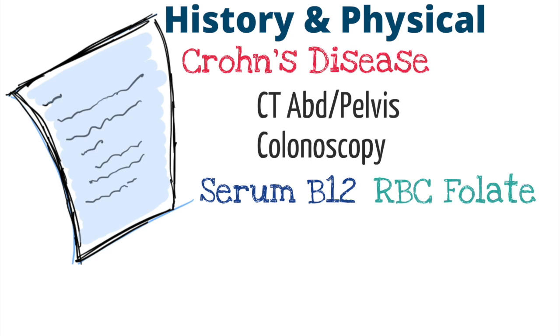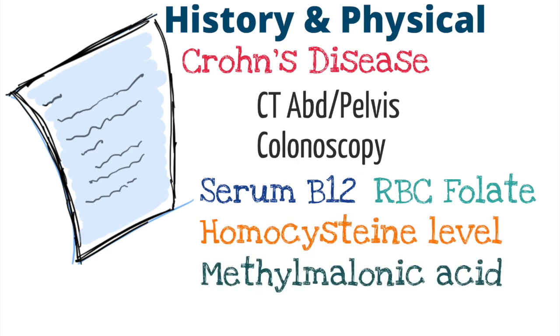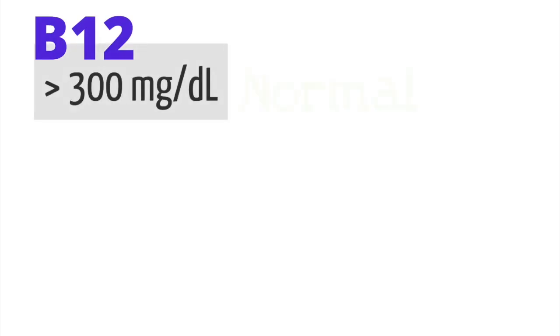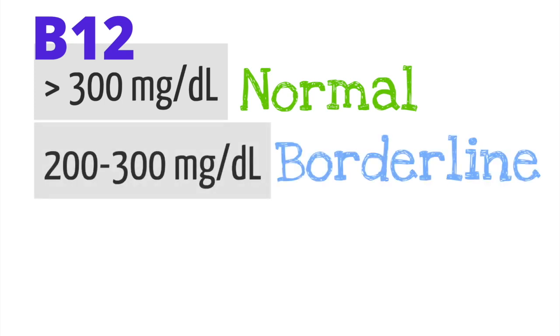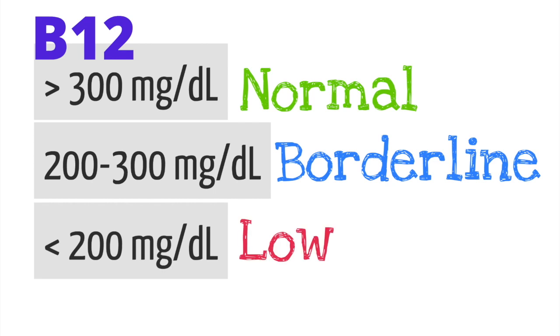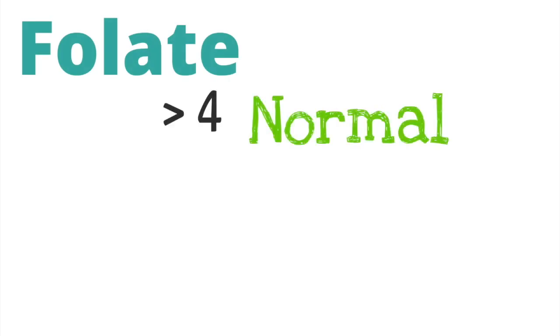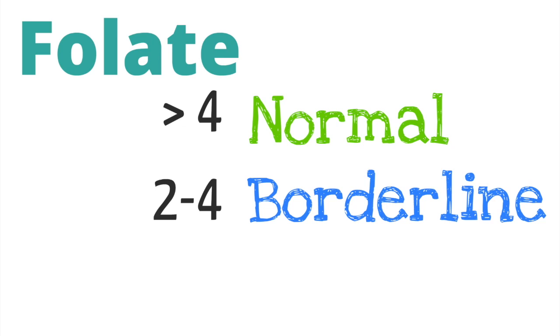Now, I should explain that I typically do not order folate testing anymore, as simply going straight to supplementation, if suspected, is cheaper without significant risks compared to testing for folate deficiency. For B12 deficiency, it's important to obtain a serum B12, methylmalonic acid, and homocysteine levels. Generally, if B12 is greater than 300 mg per deciliter, there is no B12 deficiency. If the level is 200 to 300, then this is considered borderline. If the level is less than 200, then that person is deficient. If you did order a folate, typically a folate greater than 4 is normal, with 2 to 4 being borderline, and less than 2 is deficient.